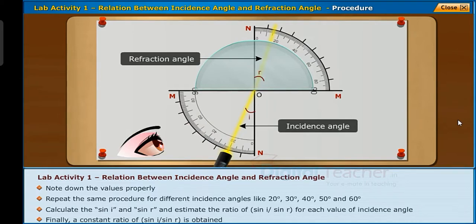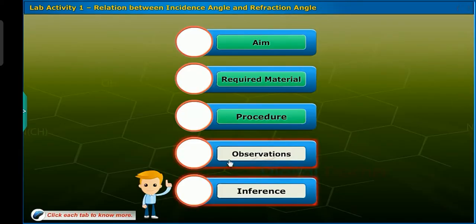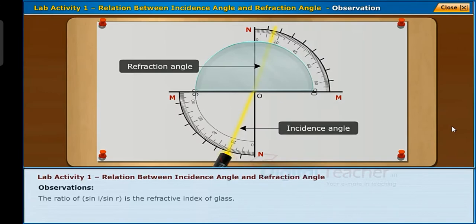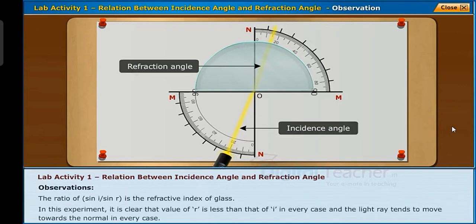Finally, a constant ratio of sin i and sin r is obtained. We observe that the ratio of sin i and sin r is called the refractive index of glass. In this experiment it is clear that the value of r is less than that of i in every case, and the light ray tends to move towards the normal in every case.